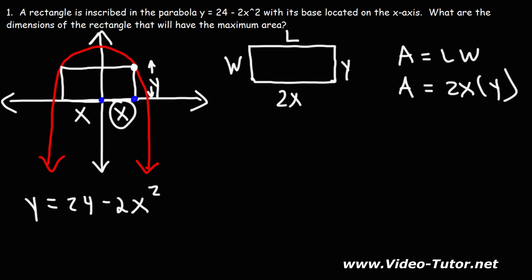We want to get the objective function, in this case the area, in terms of one variable. We need to use the constraint equation to do that. So I'm going to replace y with what it's equal to, 24 minus 2x squared. So the area is equal to 2x times (24 minus 2x squared). Distributing the 2x, that's going to give us 48x minus 4x cubed.